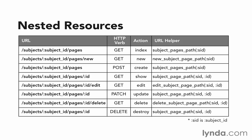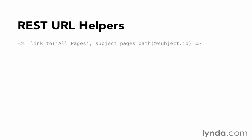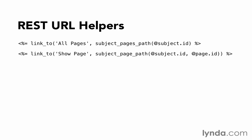Let's take a look at some of these in action. For example, if we wanted to link to all pages, we would have already picked a subject, so we would ask for subject_pages_path and then pass in the subject ID that we'd picked, and then display a list of all the pages for that subject ID. Or if we wanted to see a particular page, we would have subject_page_path (singular) and provide it both the subject ID and the page ID that we wanted to view.